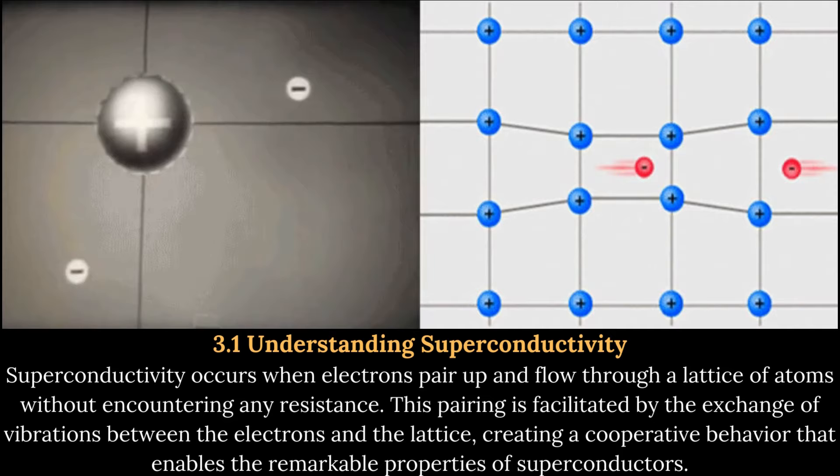Challenges and limitations of quantum levitation. Temperature and Cost Limitations: Quantum levitation is an incredible phenomenon, but it does come with its fair share of challenges and limitations. One major obstacle is the requirement for extremely low temperatures. Superconductors, the materials that make quantum levitation possible, need to be cooled to temperatures near absolute zero, which is no small feat. The cost of maintaining such low temperatures can also be prohibitive, making widespread adoption of quantum levitation difficult.